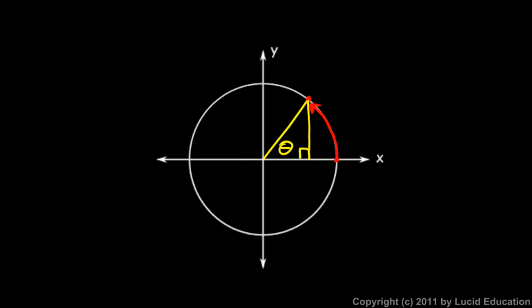That right triangle, you can think of it as sitting on the x-axis with a radius of 1 as its hypotenuse. The terminal side of the angle is the hypotenuse of the triangle.